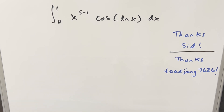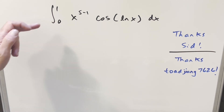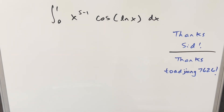I'm going to give you an interesting alternative method sent to me in the comments by Tojang7626. We have this integral that was sent to me by Sid that I did recently — the integral from 0 to 1 of x to the s minus 1, cosine ln x dx. I didn't really do anything on my own; I got the method in the comments and the problem from Sid.